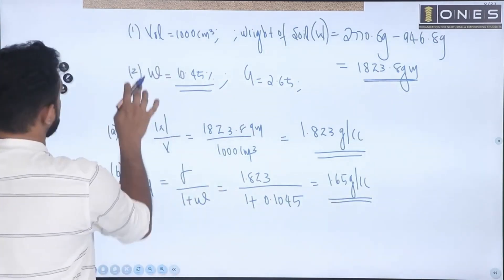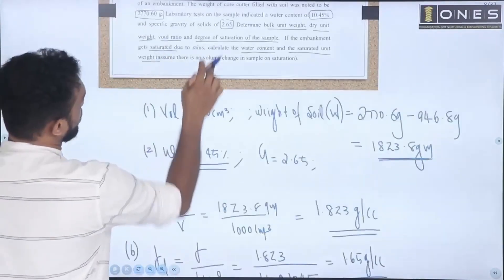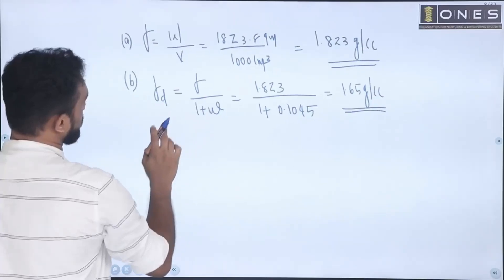We get dry unit weight as 1.65 grams per cc. Always write the unit again.